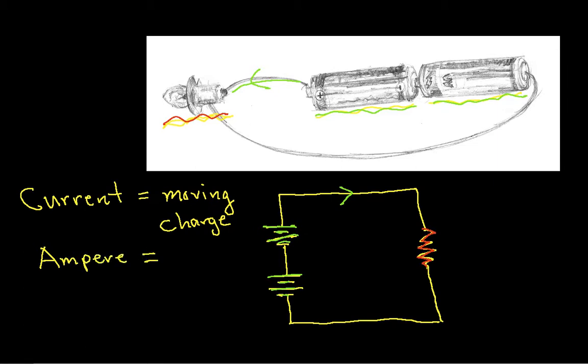An ampere is one coulomb of charge per second. As engineers we like to abbreviate this as an amp. But amp is short for an ampere. We measure current as the amount of charge flowing per second.